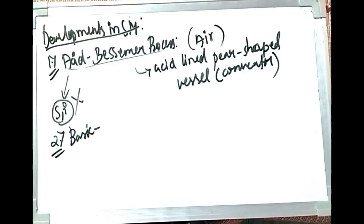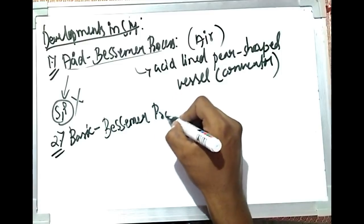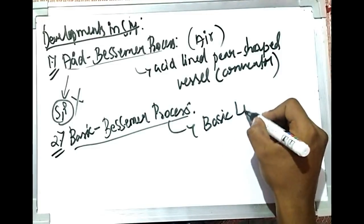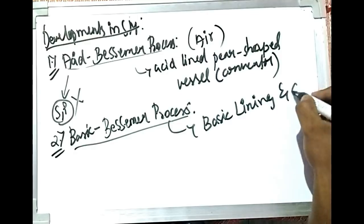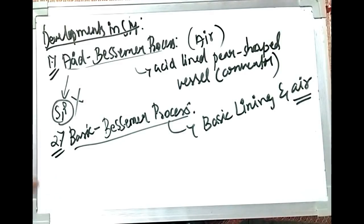The basic Bessemer process is the same process but uses a basic lining instead of an acid lining. Air is still used. The main additional disadvantage of both the acid and basic Bessemer processes is that the nitrogen content of the steel increases to a very high level because of the air used, which increases solubility of nitrogen in liquid steel and leads to embrittlement.